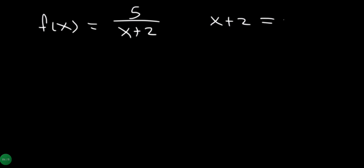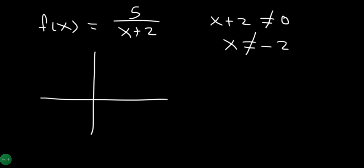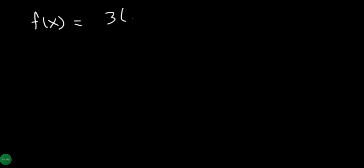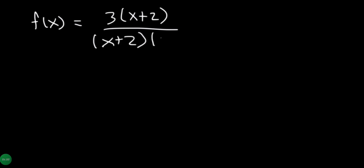x is equal to minus 2, denominator equals zero. For f(x) equals 3(x+2) divided by (x+2)(x-5), we need to find where the denominator is zero — that gives us x equals negative 2 and x equals 5.